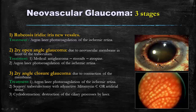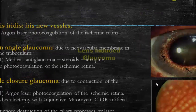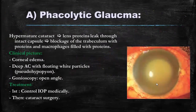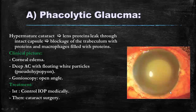In this photo, we can notice the presence of new vessels and marks of argon laser photocoagulation. Lens-induced glaucoma includes three forms. Phacolytic glaucoma occurs in hypermature cataracts in which the lens is degenerating. The lens protein leaks through the intact capsule and causes blocking of the trabecular meshwork with protein and macrophages filled with lens material. Clinically it is characterized by corneal edema due to high intraocular pressure, deep anterior chamber with floating white particles called pseudohypopyon. These white particles are formed of lens material, and by gonioscopy we can find open angle. Treatment is by controlling the intraocular pressure medically and then performing cataract surgery.